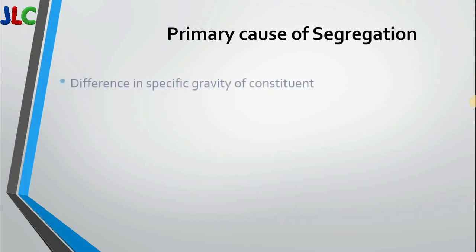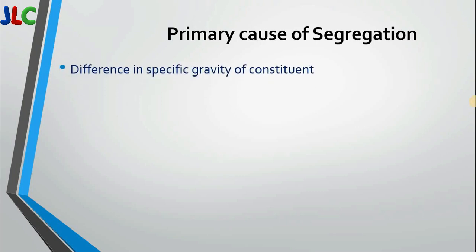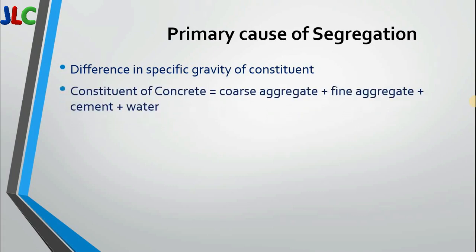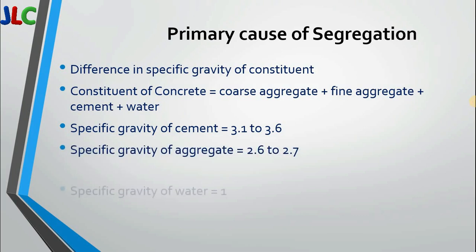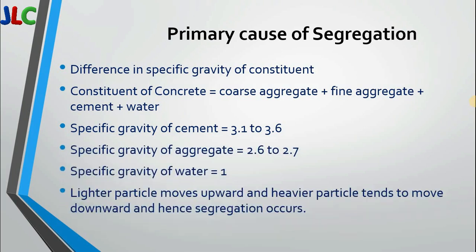The primary cause of segregation is the difference in specific gravity of the constituent materials. Different constituents of concrete have different specific gravities. For example, the specific gravity of cement is 3.1 to 3.6, that of aggregate is 2.6 to 2.7, and water is 1. Lighter particles tend to move upward and heavier particles tend to move downward due to specific gravity, and hence segregation occurs.